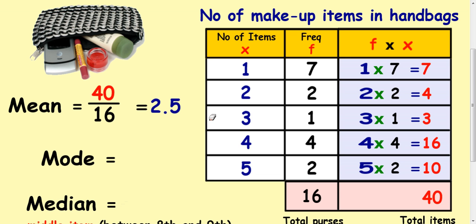Now the mode is the number that appeared the most. The number of items that appeared more than anything else. So if you look at that, that's the one with the largest frequency. So one item is the most common wasn't it? Because seven people had one item. So the mode really is just one.